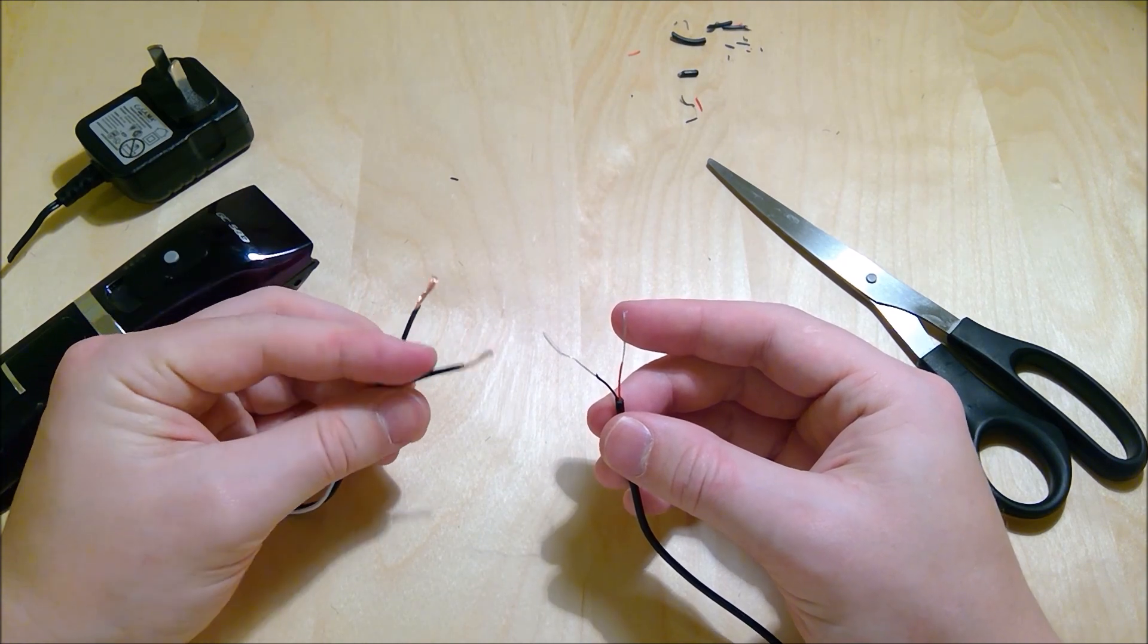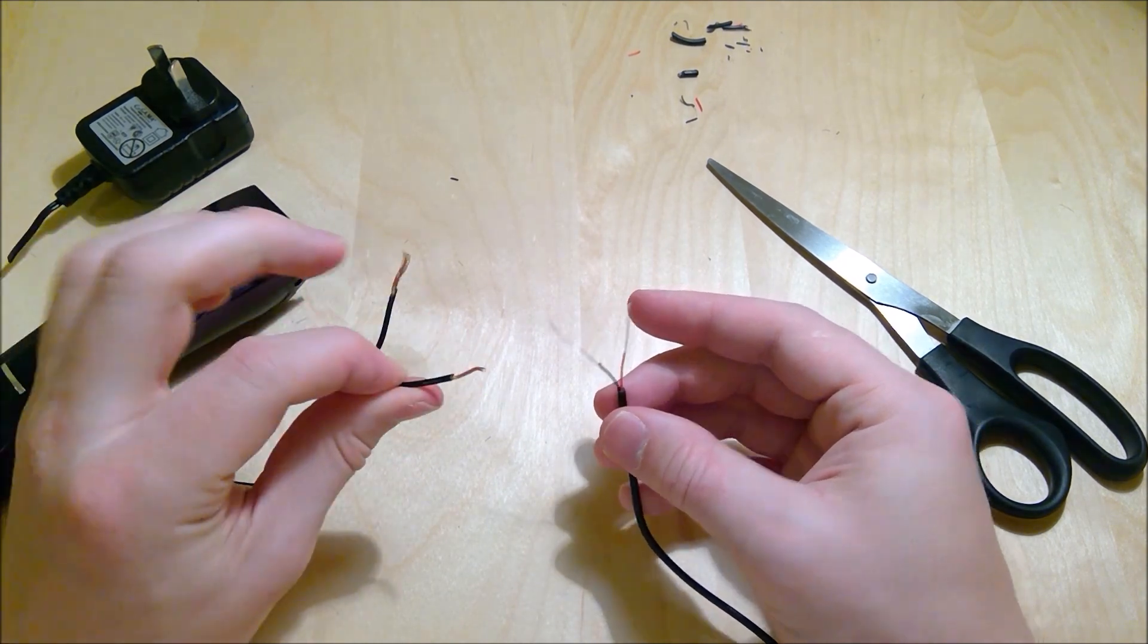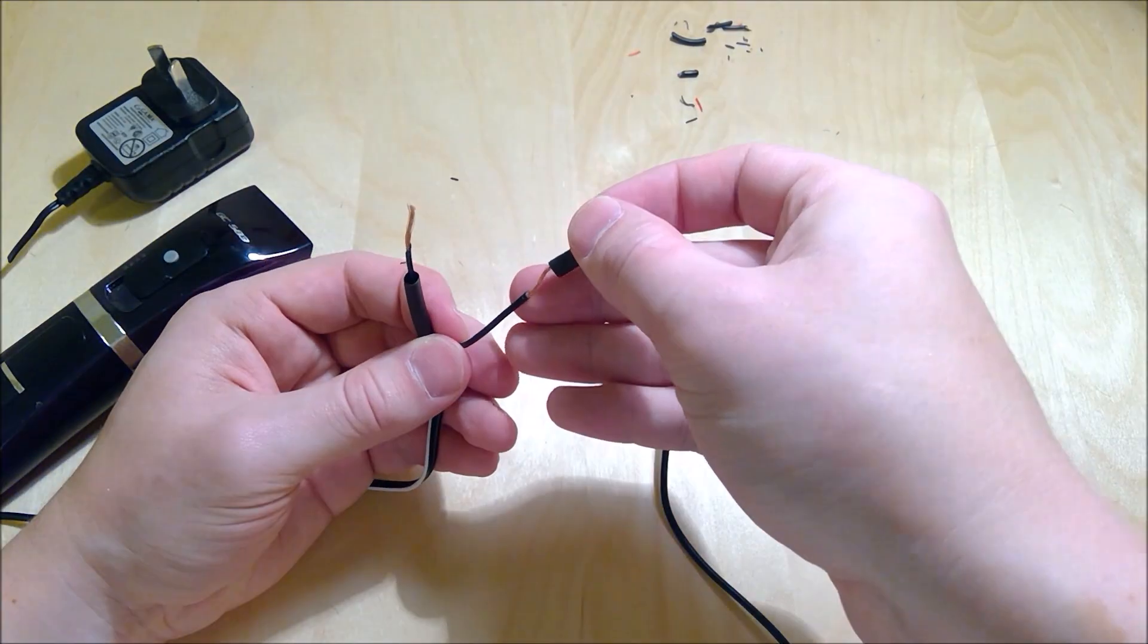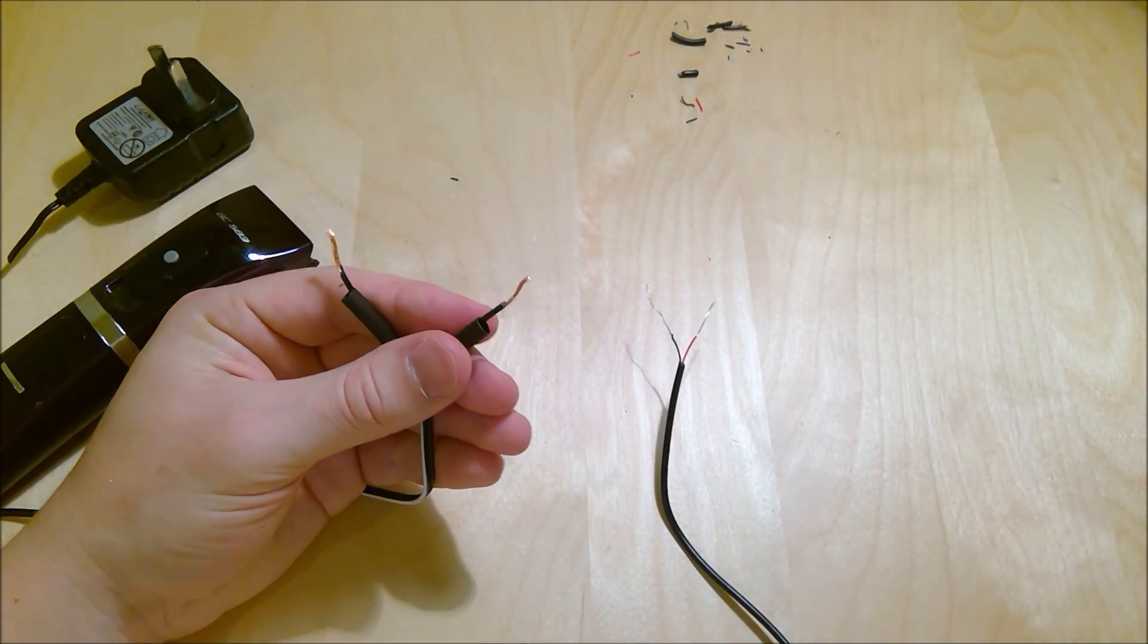Before we do this, we're going to slide a little bit of heat shrink onto this side. Now we'll twist those wires together.